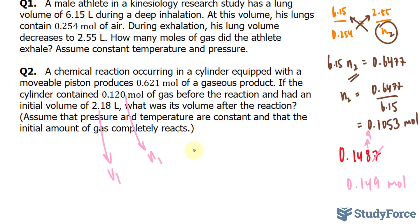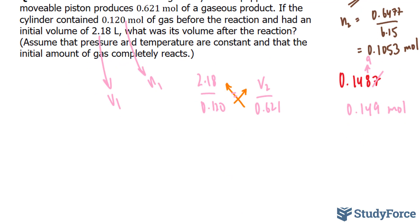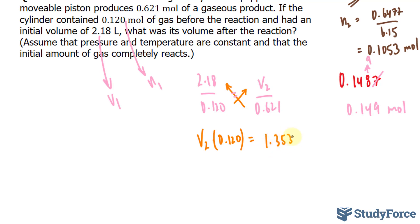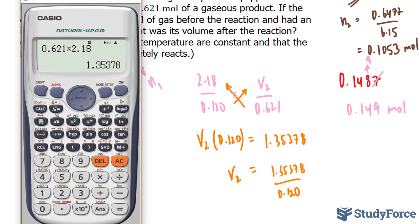The formula is V₁ over N₁: 2.18 over 0.120 is equal to V₂ over 0.621. I'm going to cross multiply and worry about significant figures at the end. V₂ times 0.120 equals 0.621 times 2.18. That gives us 1.35378. Dividing both sides by 0.120, we get 11.28.